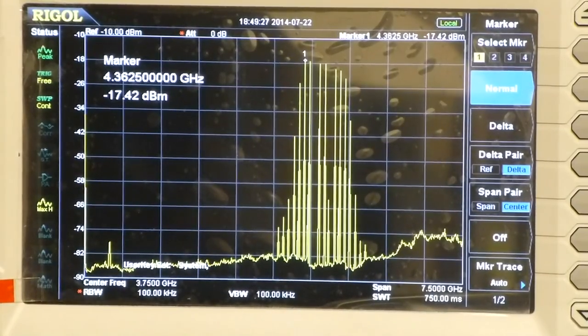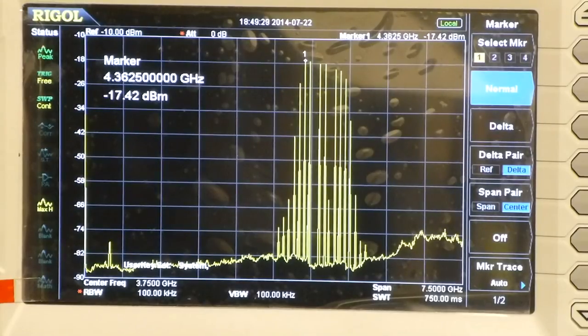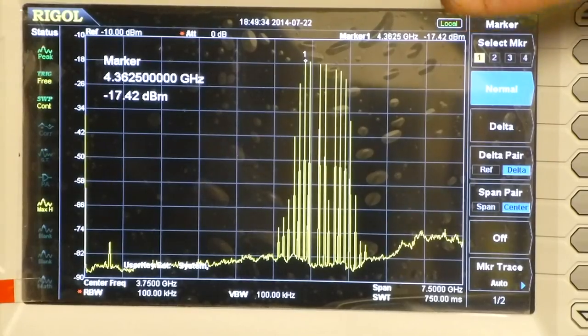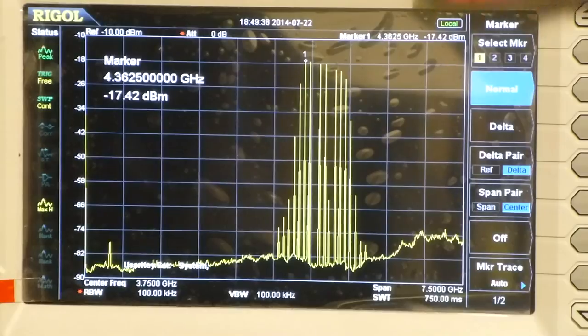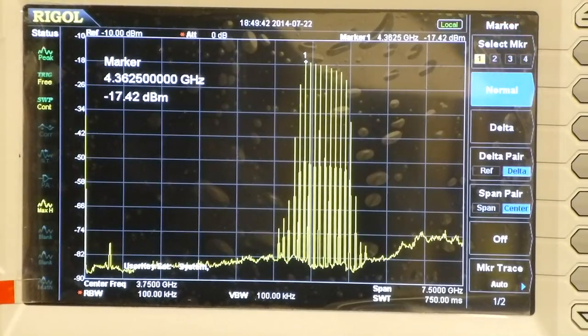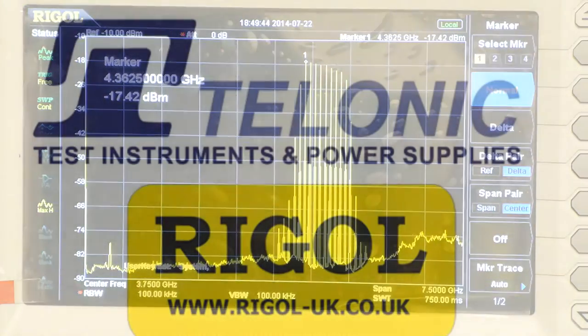So that's an example of what you can do with the powerful new DSA 875 from Rigol. It's available with and without tracking generator. We expect the first units to go really quickly, so let us know as soon as you can through rigol-uk.co.uk and we'll get them to you as quickly as possible.